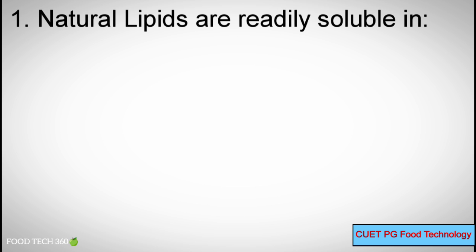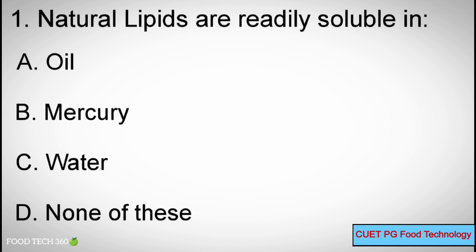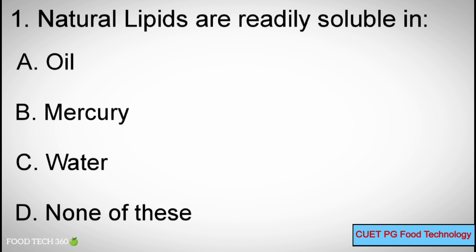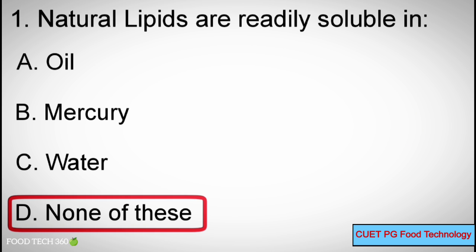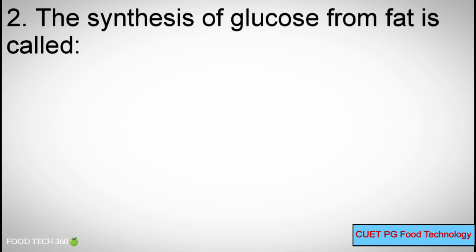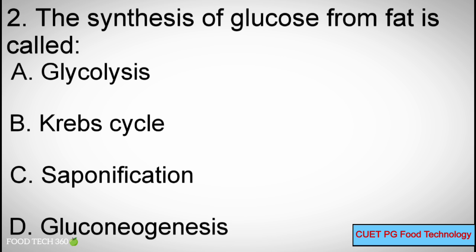Question Number 1: Natural lipids are readily soluble in — Option A: Oil, B: Mercury, C: Water, D: None of these. Correct answer: D, None of these.